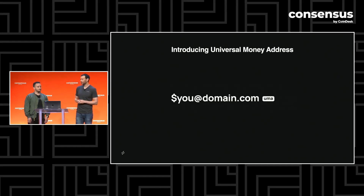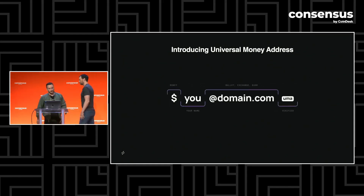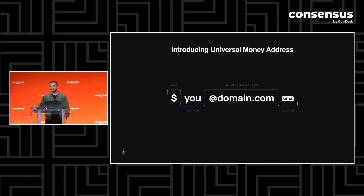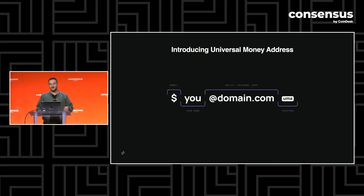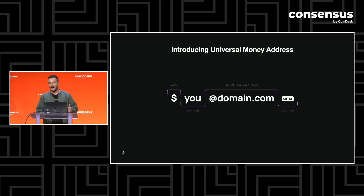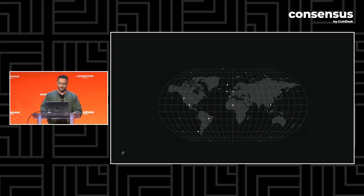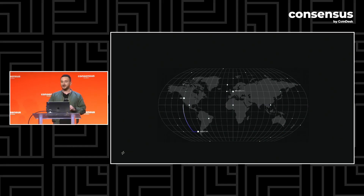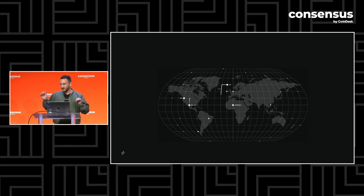To walk you through how this works, Jeremy's going to talk through universal money addresses. This is a universal money address, or UMA for short. An UMA is like an email address, but for money. UMA is global and open source. When I say open source, UMA was built on top of really great open standards like LNURL and Lightning addresses for those familiar with Lightning. When I say global, UMA can send from any currency in the world to any currency in the world, whether that's fiat or crypto or whatever you can come up with.